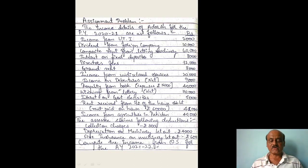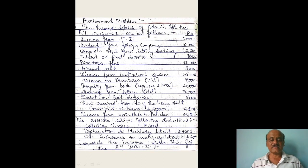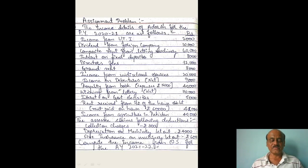Rent received from subletting half of the house: Rs. 48,000. Rent paid on whole house: Rs. 60,000, so half house = Rs. 30,000. Net income from subletting = Rs. 48,000 less Rs. 30,000 = Rs. 18,000. Income from agriculture in Pakistan is taxable under other sources: Rs. 50,000.